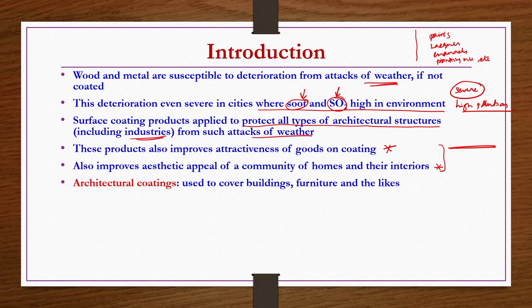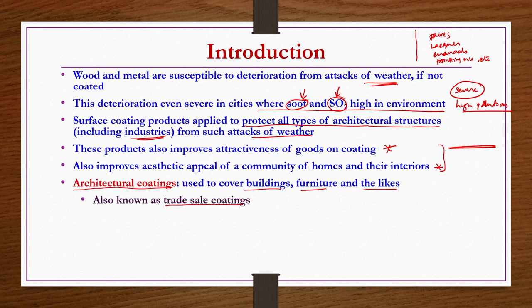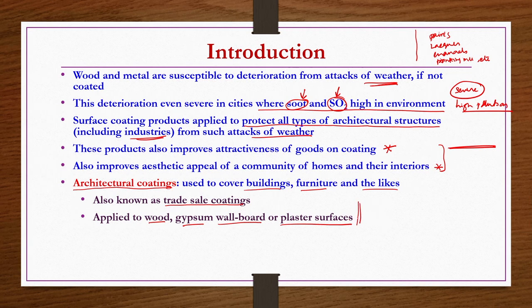Surface coatings can be divided into two types. One is architectural coatings, which are used to cover buildings, furniture, and the likes — also known as trade sale coatings. These are applied to wood, gypsum wallboard or plaster surfaces, blackboards, etc. These coatings are usually known as architectural coatings applied to buildings, furniture, boards, canvases, and similar surfaces.